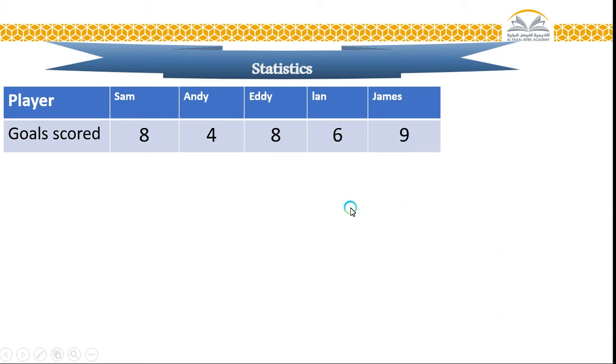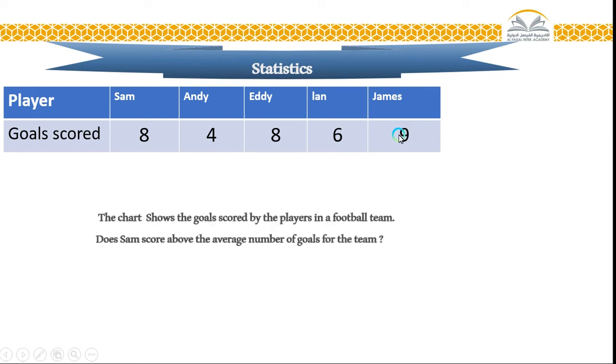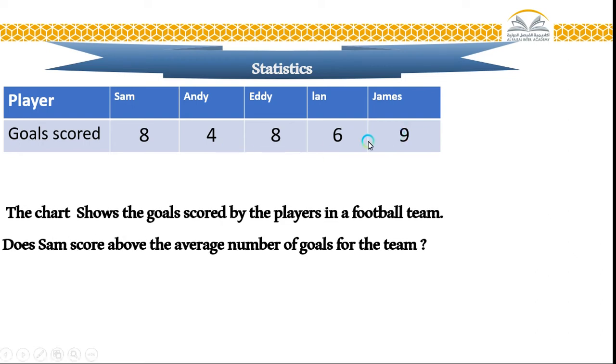So to find the mode of this data, the mode is the number or the most repeated. I have only eight repeated two times. The number four, only one time. Number six, only one time. Number nine, only one time. So the chart shows the goals scored by the players in a football team.